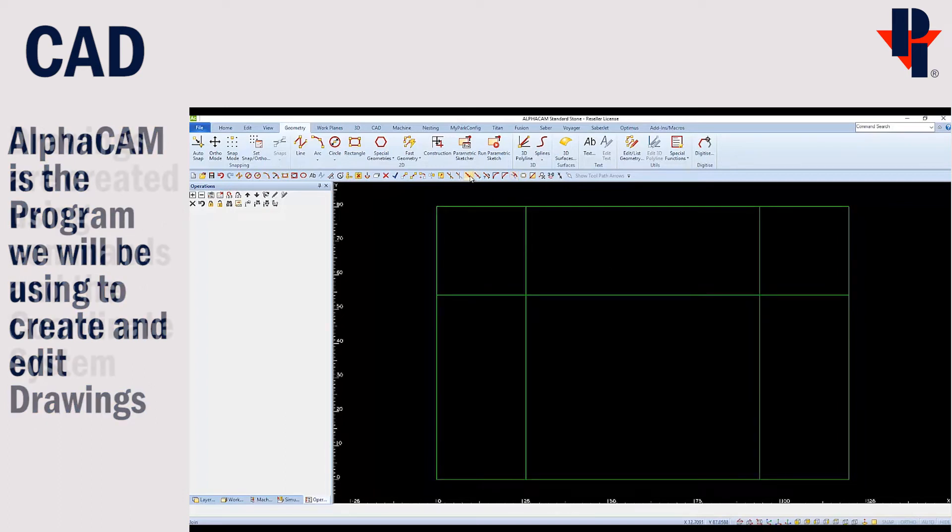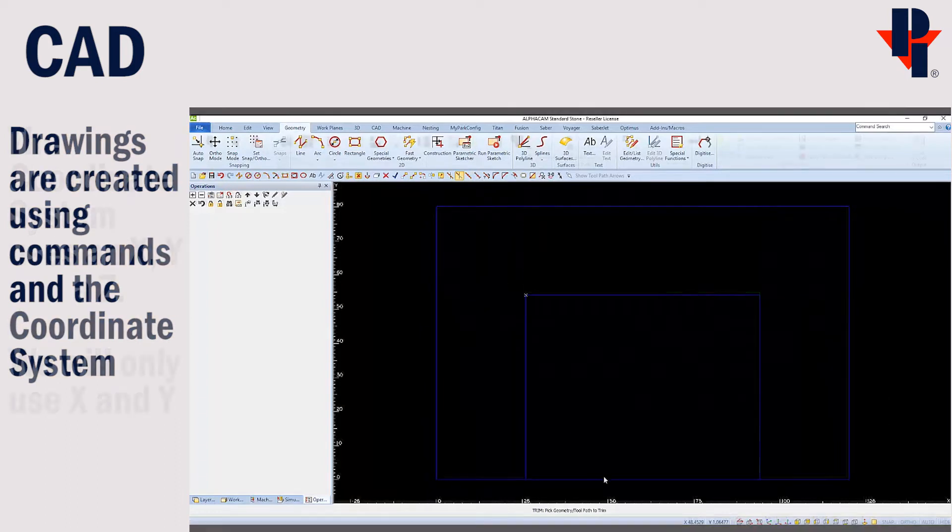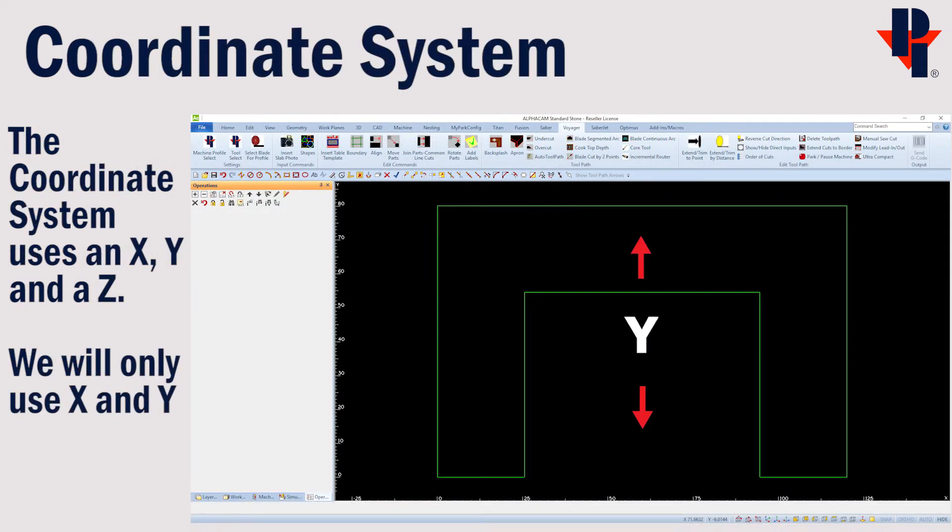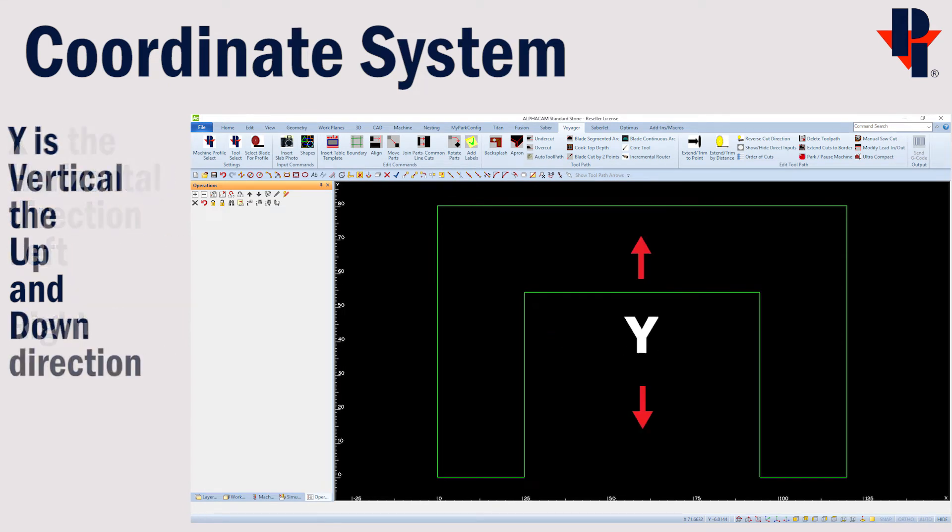Dimensions are entered through a coordinate system. We will only need to use the x and y directions. The x direction is horizontal and the y direction is vertical.